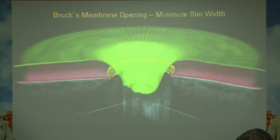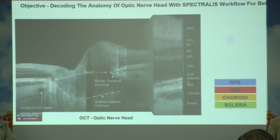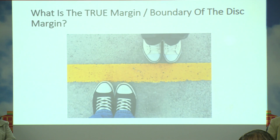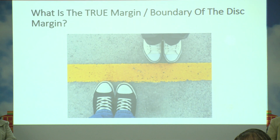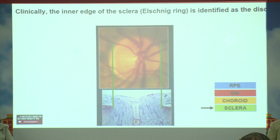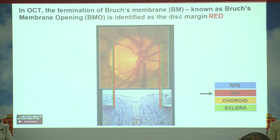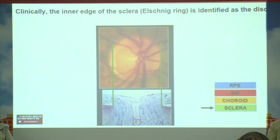This is what is currently revolutionizing OCT interpretation. So let us decode it from the point of the Spectralis, or the Glaucoma Module Premium Edition. What is the true margin of the optic disc? This is very debatable. Clinically, the inner edge of the sclera — the Elschnig's ring — was defined as the disc margin. In OCT, the termination of the Bruch's membrane, known as the Bruch's membrane opening, is defined as the disc margin — hence the confusion.